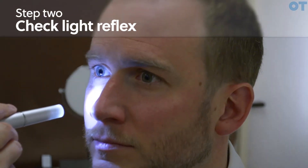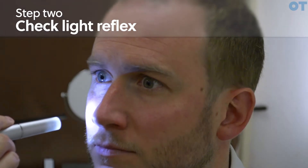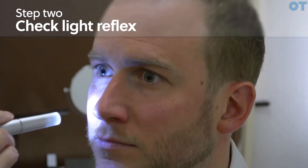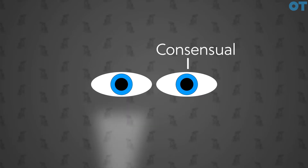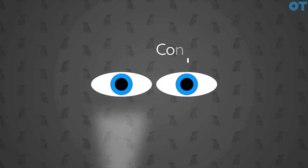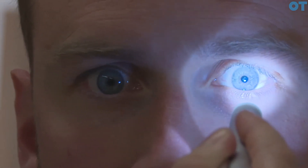The next thing you want to do is check the light reflex. Ask the patient to look at a non-accommodative target at 6 metres. You want to illuminate the pupil from below, first checking the direct reflex and then the consensual reflex — that's the reaction of the contralateral eye. You want to do this at least three times just to make sure that the pupil is reacting normally.